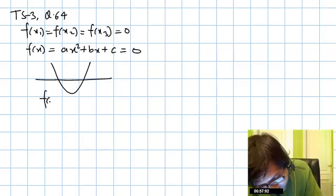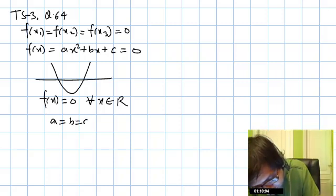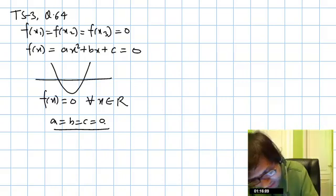That is, F(x₁) means that a = b = c = 0. So F(x) is 0 for all values of x. Now using this property, we have to...